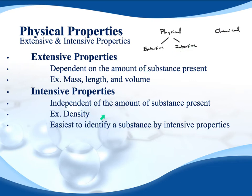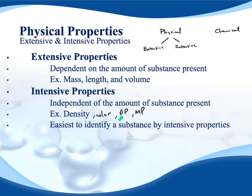Intensive properties are the opposite — they are independent of the amount of substance present, meaning it doesn't matter how much you have. Density is a great example: whether you have 2 grams of aluminum or 2,000 grams of aluminum, if you calculate the density, it will always be the same. Color will always be the same. Boiling point and melting point are also intensive — a single drop of water boils at 100°C, and an entire pot of water also boils at 100°C. The boiling point doesn't change regardless of how much water you have.